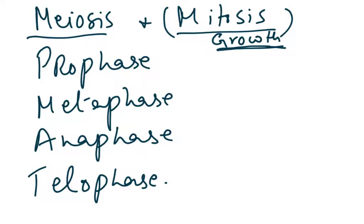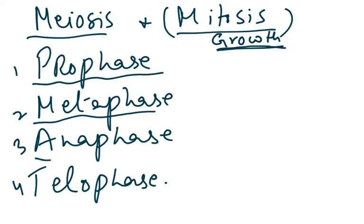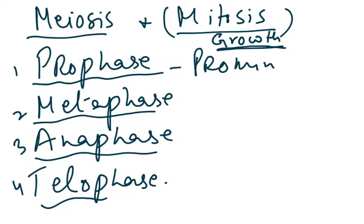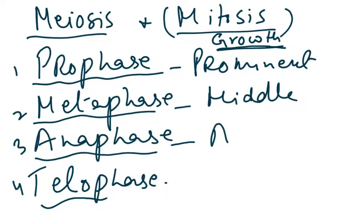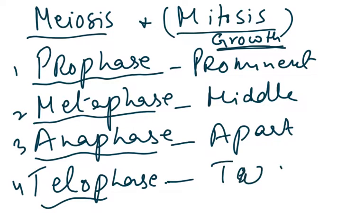In meiosis, we have again the four phases. The first phase is prophase, then metaphase, then anaphase, and then telophase. So prophase — we say prominent. Metaphase — we say middle. Anaphase — we say apart. And telophase — we say two. This is just to make you remember the different phases, and this mnemonic is of course common to both mitosis and meiosis.